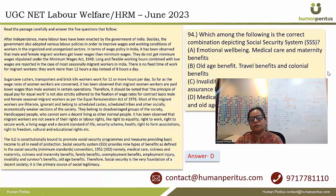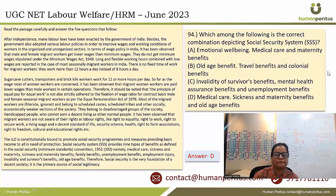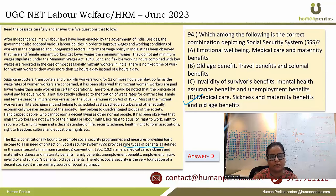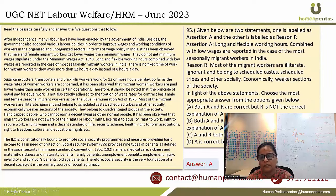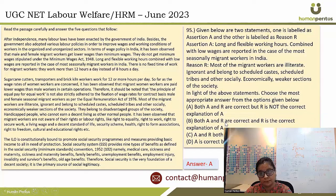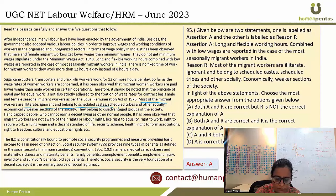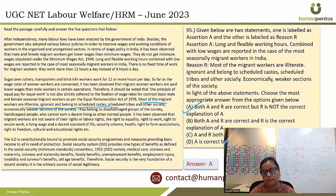Which is the correct combination depicting a social security system? In the last paragraph, nine types of benefits under the social security system are mentioned. The correct option relates to medical care, sickness and maternity benefits, and old age benefits. For the assertion and reasoning question: the assertion about long and flexible working hours with low wages is correct as per the passage. The reason about most migrant workers being illiterate and belonging to scheduled castes is also correct, but they are not connected as assertion and reasoning. So both A and R are correct but R is not the correct explanation of A — answer is option A.